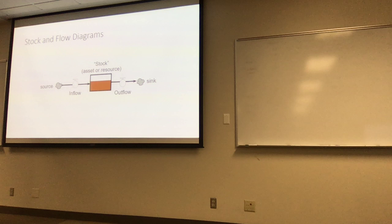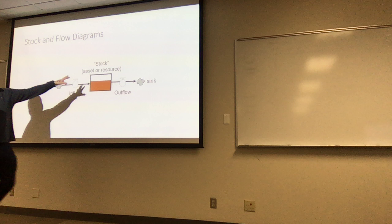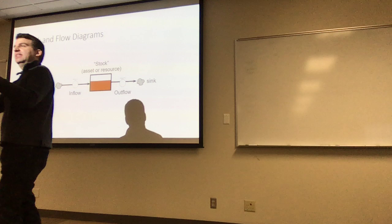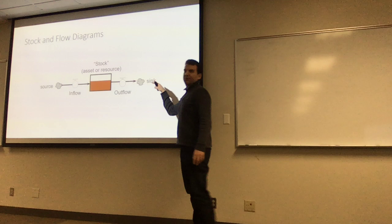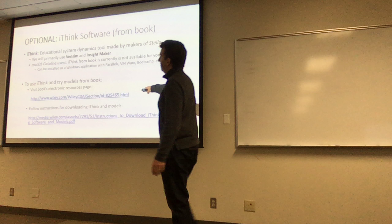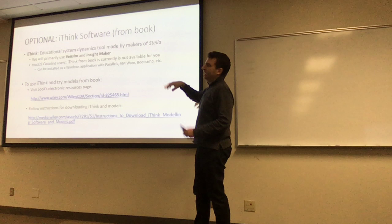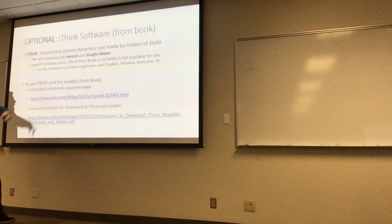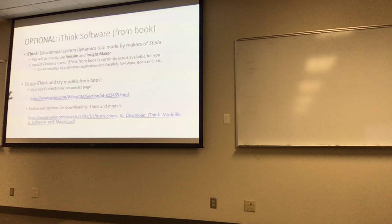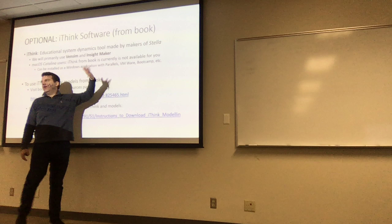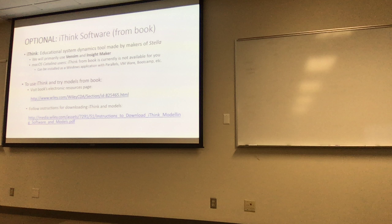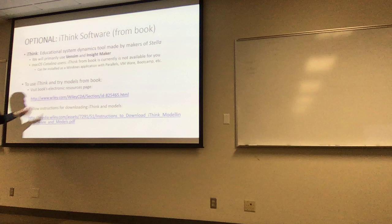We model how things change over time by building these networks of buckets, where things that change over time are like the liquids, and the things causing them to change are like the valves dumping more liquid in or pulling liquid out. For these stock and flow models, we can use software packages. The book uses all examples done in a package called iThink. iThink is a version of a very expensive tool called Stella. If you're a Mac user on Catalina, the iThink accessible from the book links won't work on the newest macOS — you're limited to running it in Parallels, VMware, or on Windows. We're not requiring you to use iThink, but if you want to run examples from the book, resources are available online.